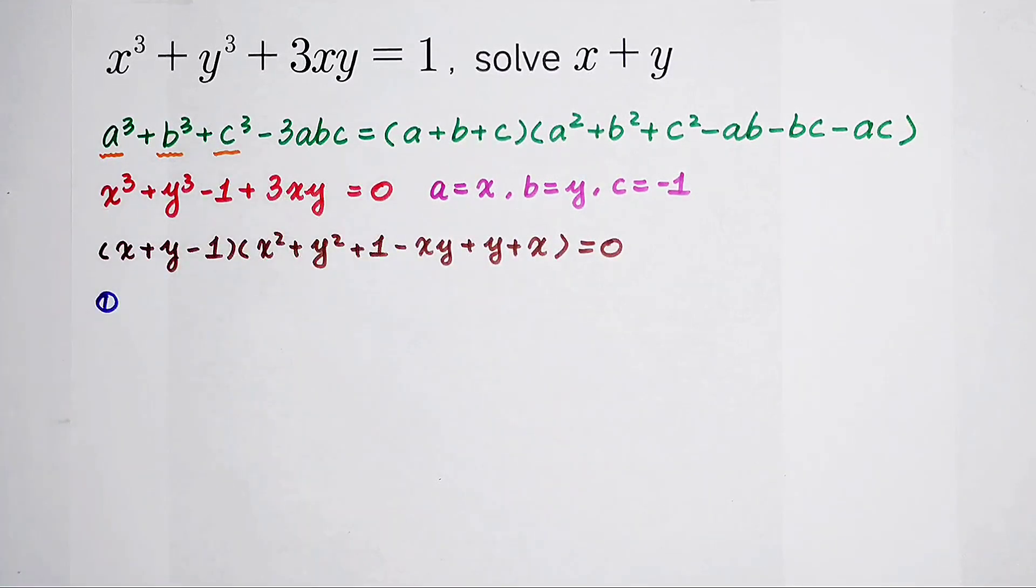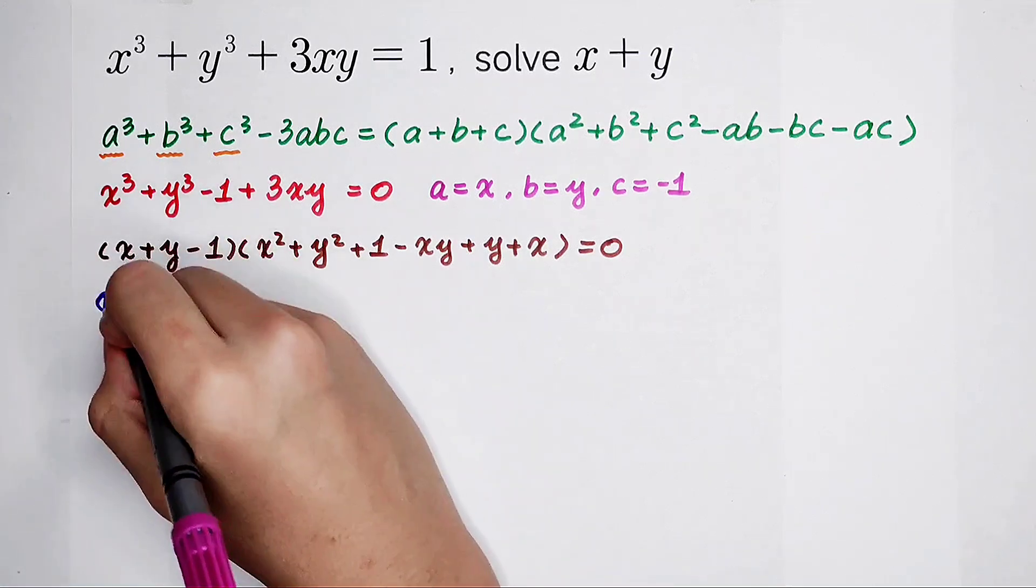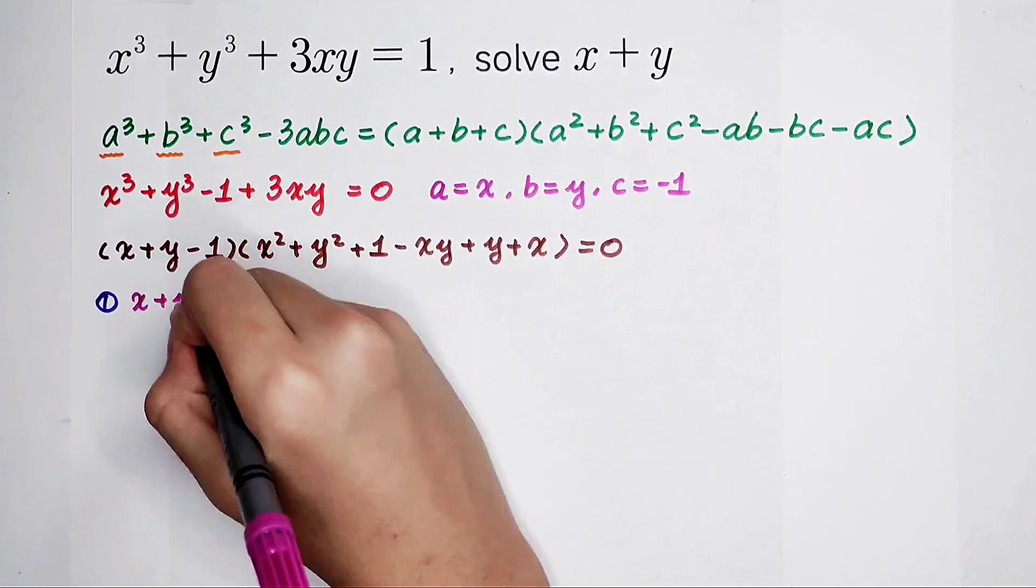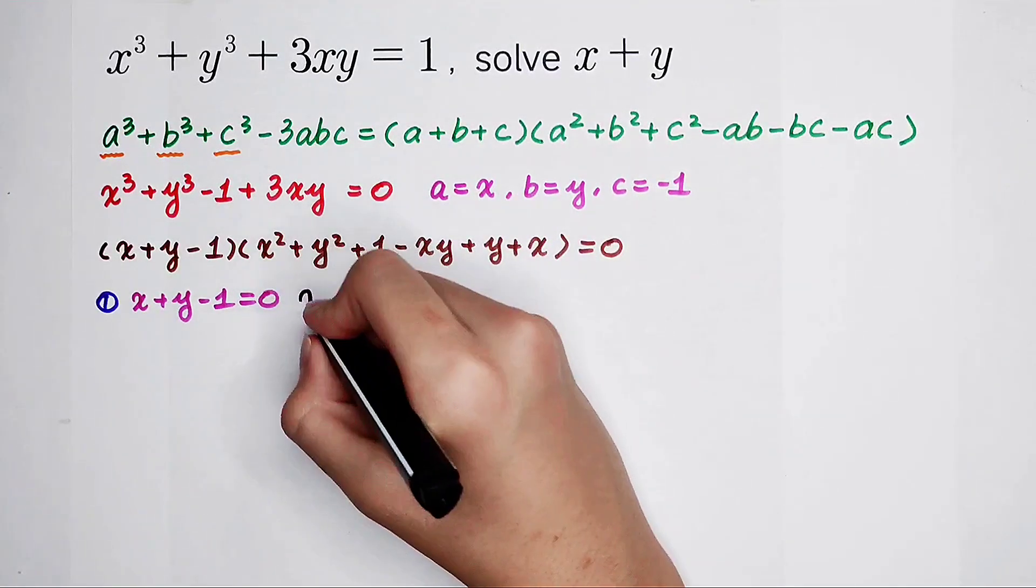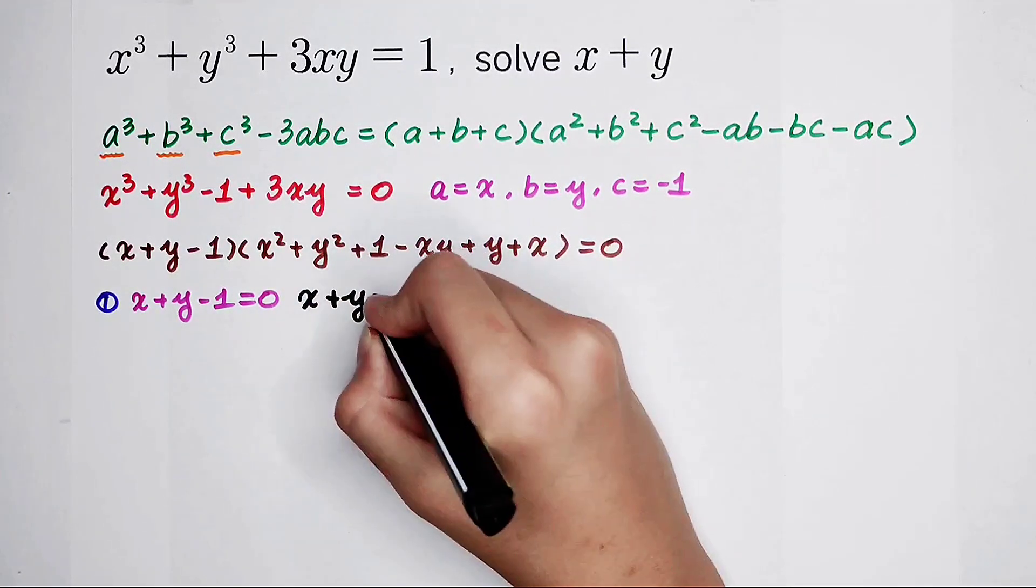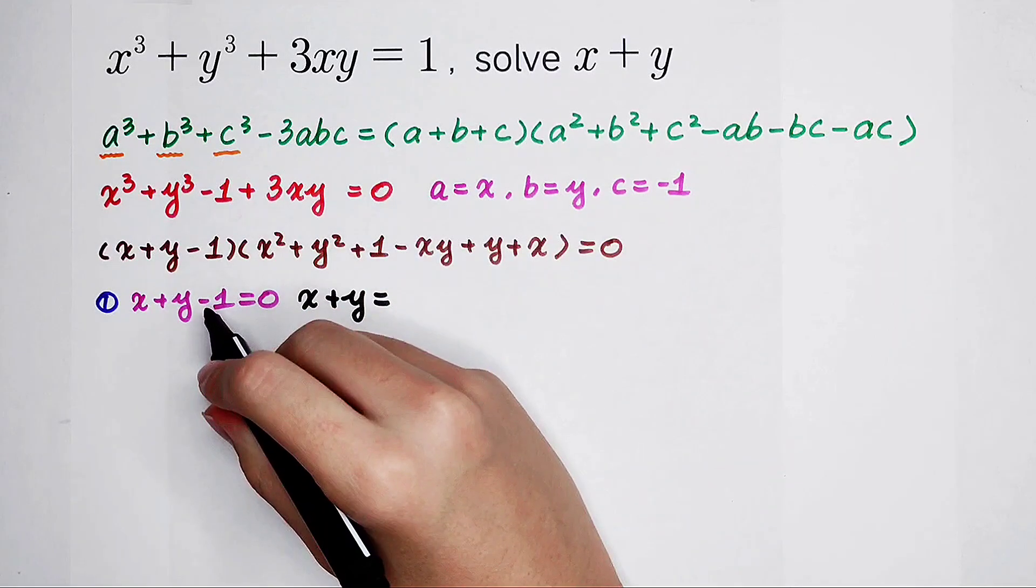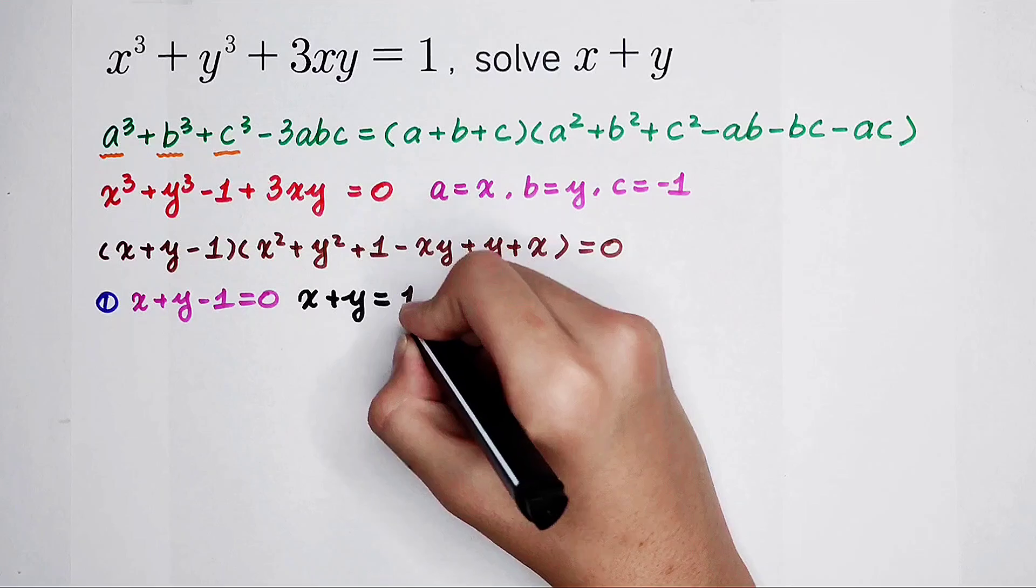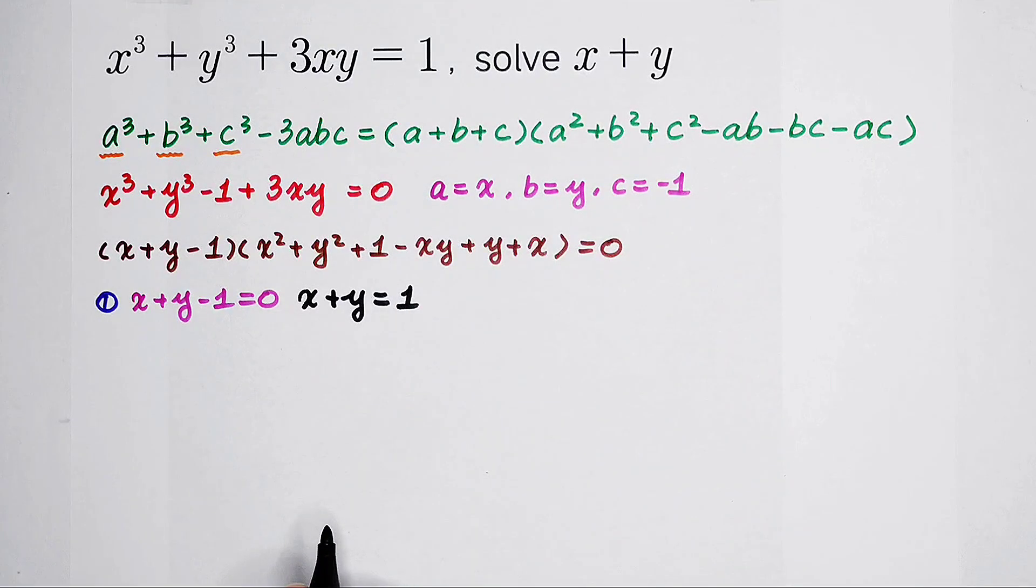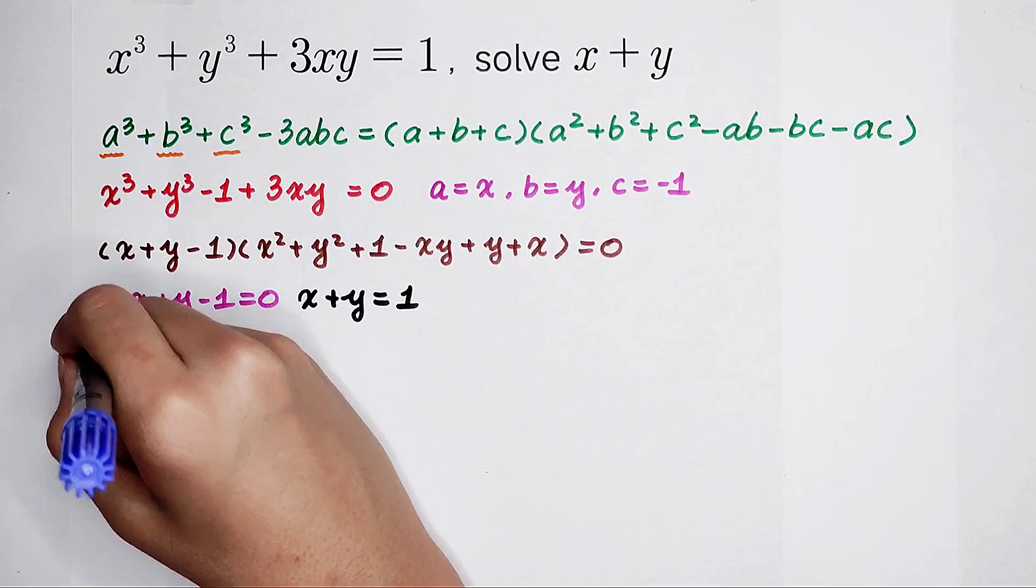The first case is x plus y minus 1 equals 0. So in this case, x plus y, if we move the negative 1 from the left hand side to the right hand side, is just 1. Or add 1 to both sides, it's also okay.